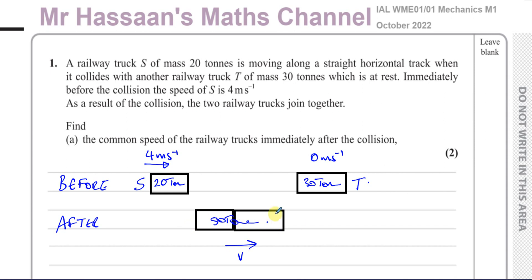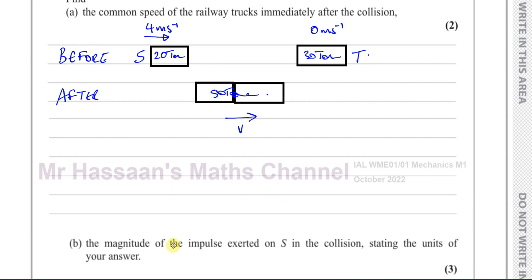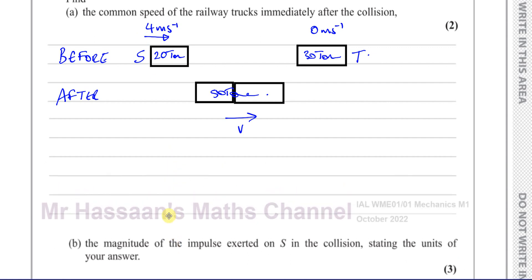So what we can say is that the total momentum before and the total momentum after the collision must be the same. Conservation of momentum. So we can say that the total momentum before the collision is equal to the total momentum after the collision. So what's the total momentum before the collision? Well, what I'm going to do, I'm going to take this direction as positive.